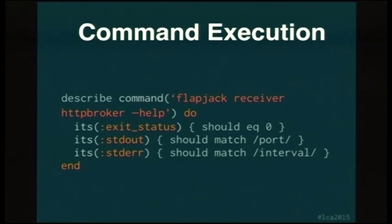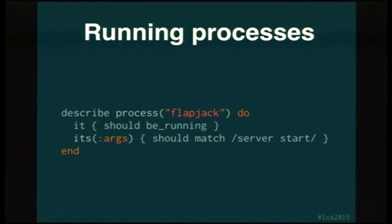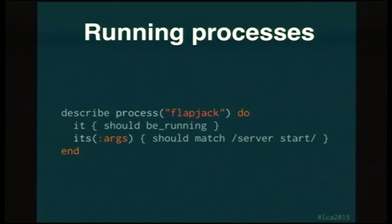Command execution: ServerSpec can log into your test environment, run a command, and verify the exit status — in this case, should equal zero, so it didn't fail. It can also check that the standard output includes certain words and that standard error includes what you expect. You can also check for running processes. When we install a Flapjack package on Ubuntu and Debian, Flapjack automatically starts, as is the convention on Debian-based platforms. After the package is installed, we can assert that Flapjack is running and that the process's arguments include 'server start'.